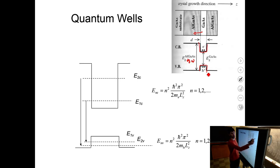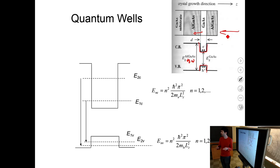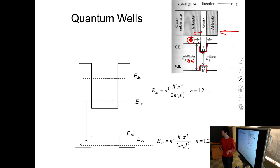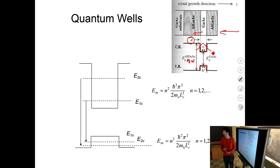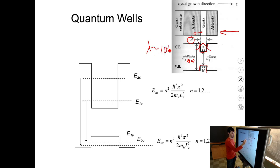Looking from the top, the quantum well is a two-dimensional surface — electrons are localized in this layer; they cannot go up or down. If you choose the thickness d small enough that the de Broglie wavelength of an electron in this material is larger than or equal to d, then the electron wave function lives in the entire quantum well. You can work out the de Broglie wavelength from the Fermi velocity and the effective mass. It turns out that in semiconductors, the wavelength of these electrons can be tens of nanometers.